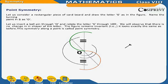Let us consider a rectangular piece of cardboard and draw the letter S as shown in the figure below. Name the turning point in S as O. Let us insert a ball pin through O and rotate the letter S through 180 degrees. We will observe that there is no change in the shape of the letter. The figure remains invariant, i.e., it looks exactly the same as before. This symmetry along a point is called point symmetry.